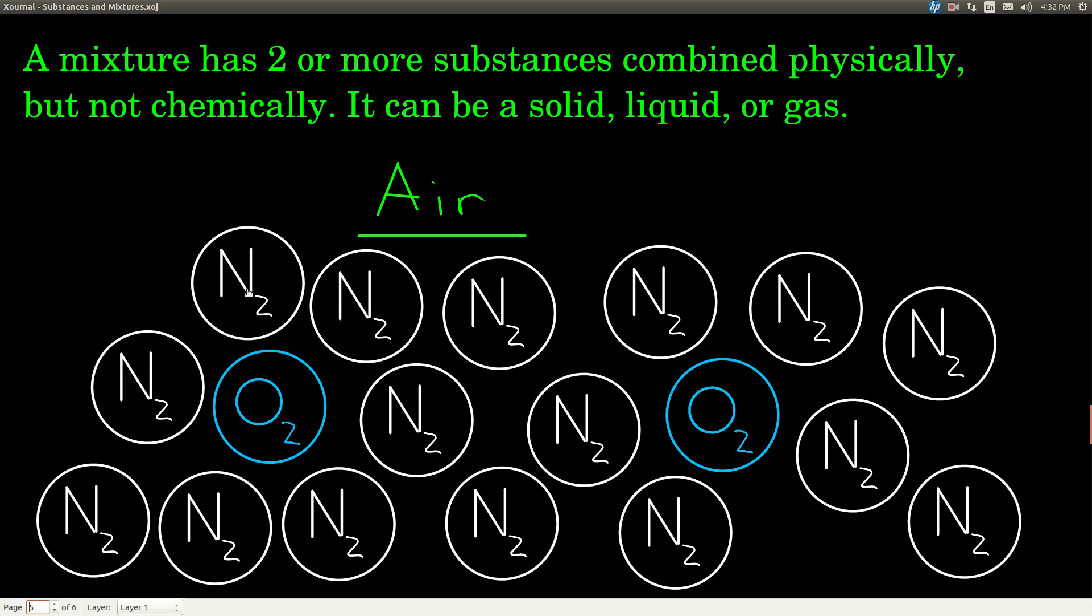The N2s are nitrogen, and the O2s are oxygen. They're mixed together but they're not combined. The oxygens and nitrogens aren't combining with each other - they're still separate. That's a mixture.